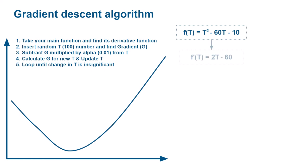First of all, we will find our derivative function. Then, we will take random t-number, which we selected as 100, and calculate gradient at that point, which is 140.